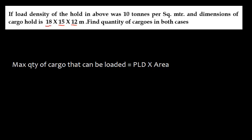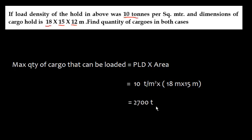Now, if the permissible load density of the hold is 10 tons per square meter and the cargo hold dimensions are 18 m (length) × 15 m (breadth) × 12 m (height), we find the maximum cargo quantity using: permissible load density × area. That is 10 × (18 × 15) = 10 × 270 = 2,700 tons.